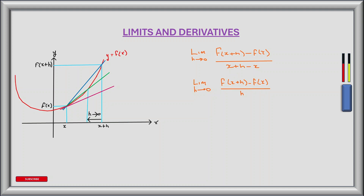Now we can use this to find the derivative of a function. The derivative will be another function giving us the gradient of the tangent at any point on the graph. Let's use this to find the derivative of f(x) = x² + 3. So we take the limit as h tends to zero, substitute x plus h into the function to get (x+h)² + 3, then subtract x² + 3 from it, and divide all that by h.